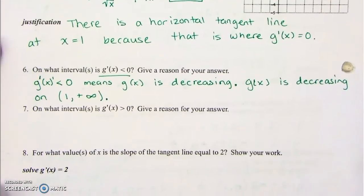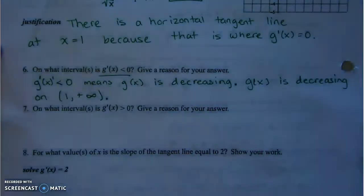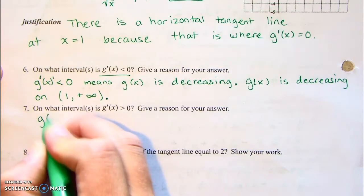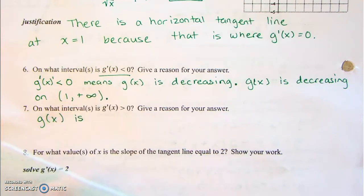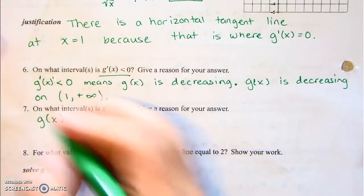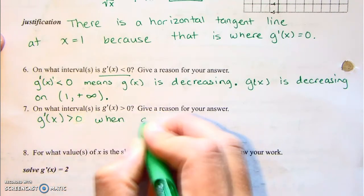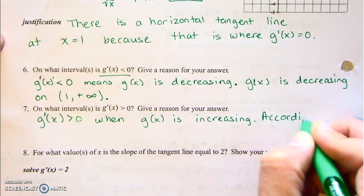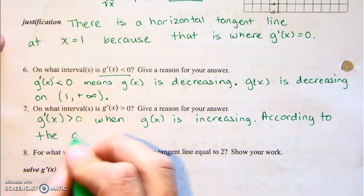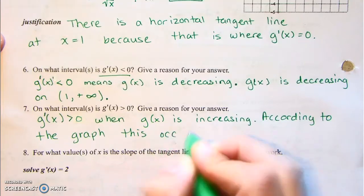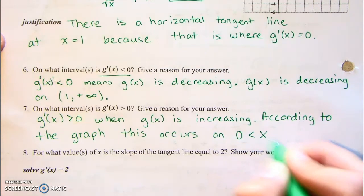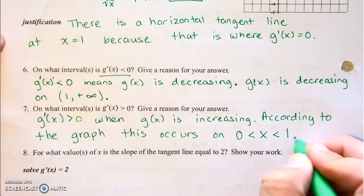On what intervals is the derivative greater than 0? g prime of x is greater than 0 when g is increasing. According to the graph, this occurs on the interval from 0 to 1.